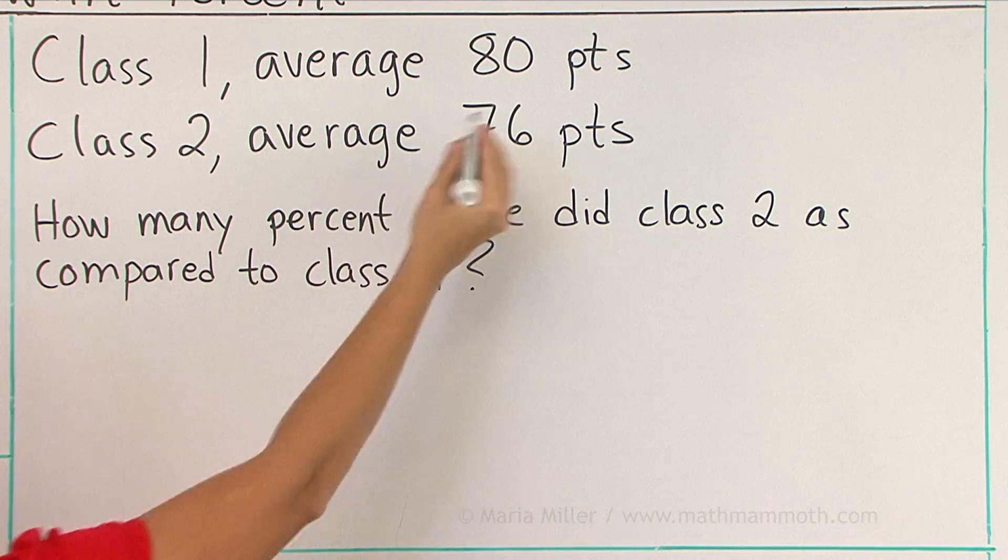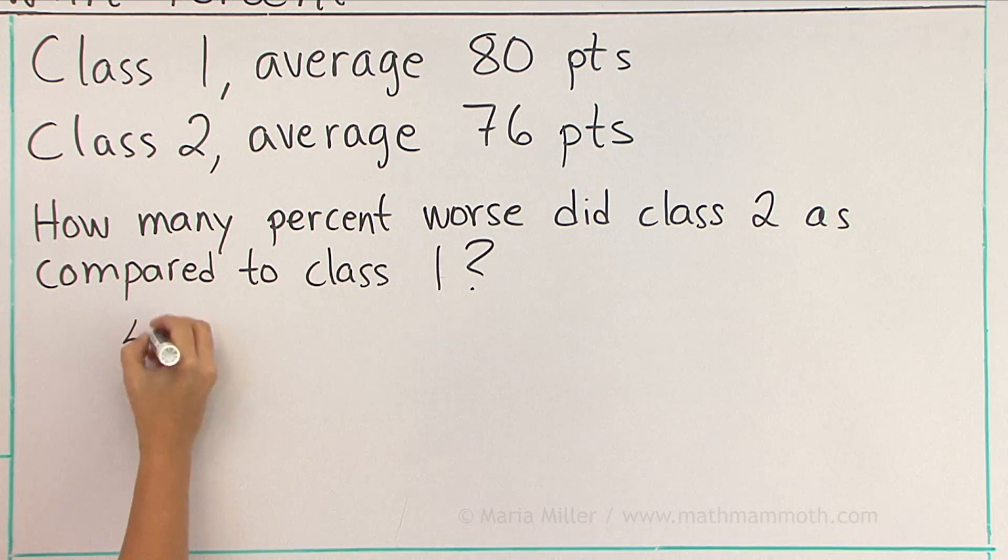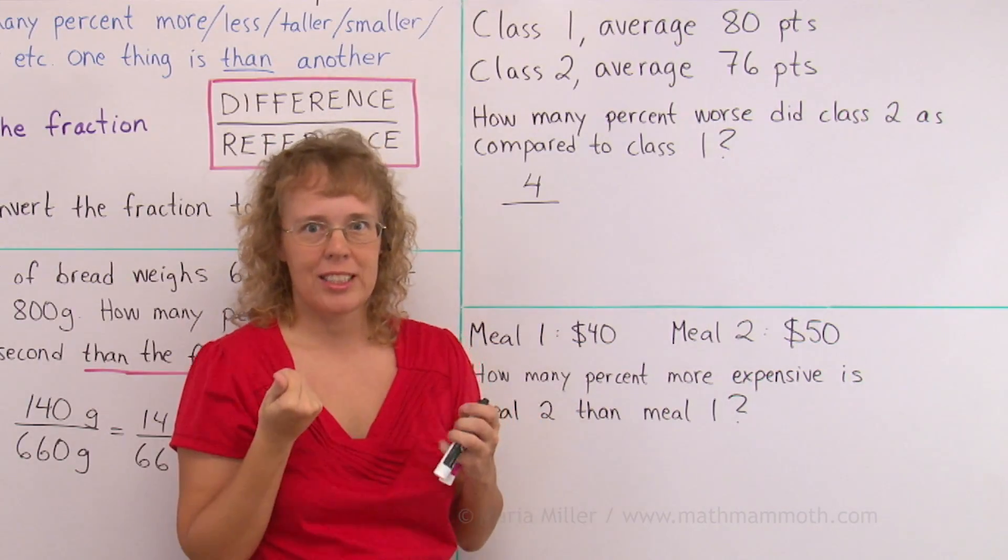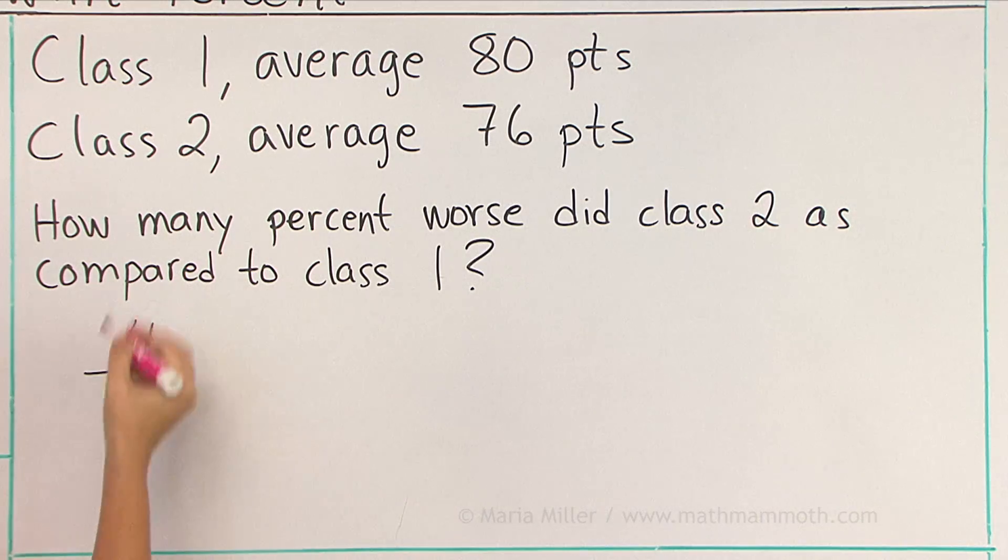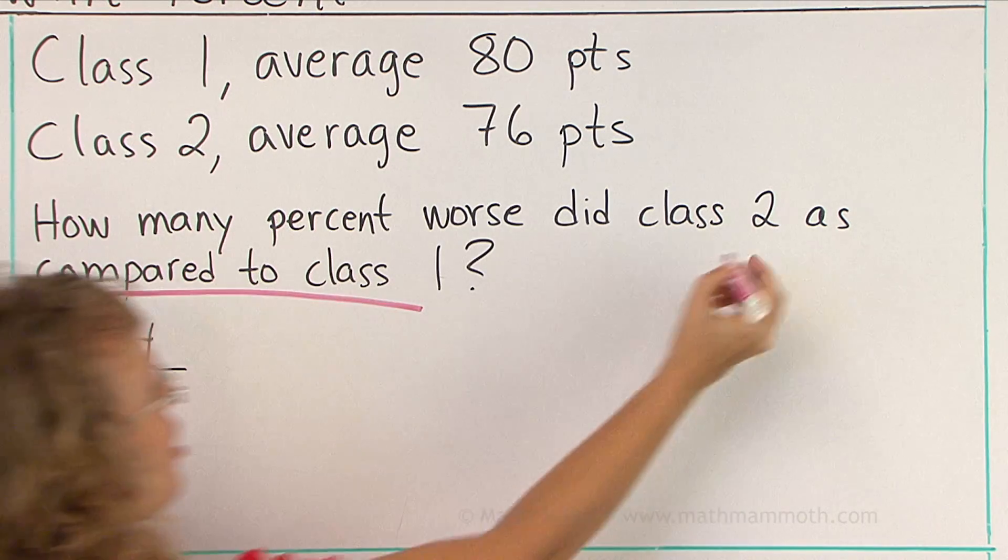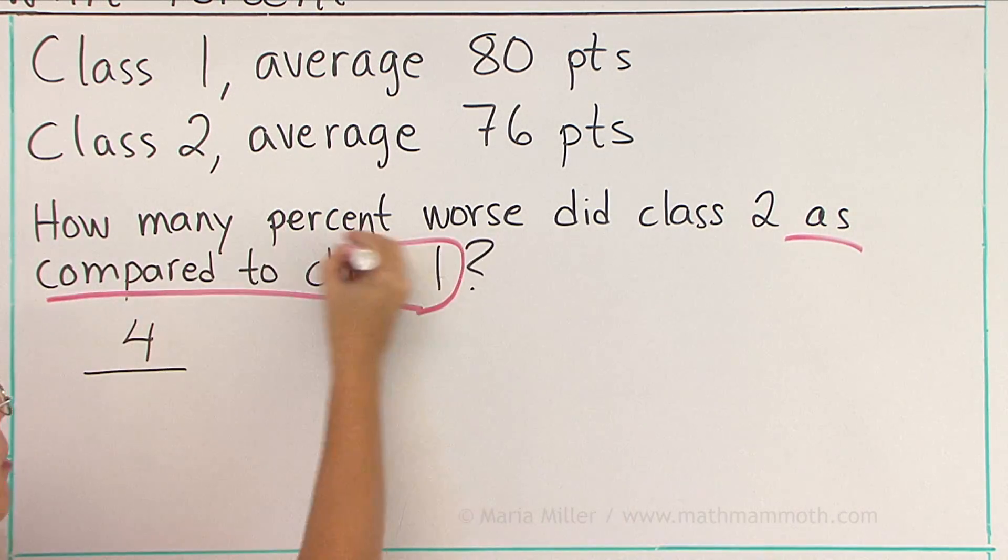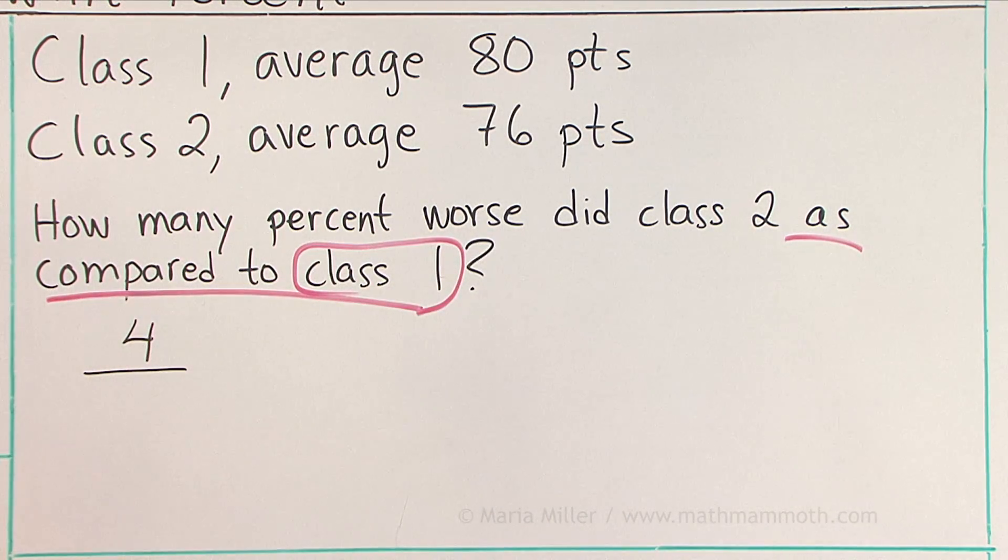The difference is easy. It is 4 points, right? Over reference. Which of those classes is our reference class that we are comparing to? That's easy too. As compared to class 1. We are comparing to class 1. So over here we put 80.